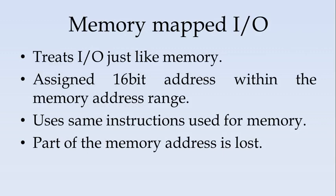Memory mapped IO, as the name suggests, the IO is mapped like a memory. The 8086 treats the IO device just like a memory. Since it is a memory, 16 bit address are assigned for this IO devices within the memory address range. Within the memory address range any of the address can be assigned for the IO device. Since it is just treated like a memory, the 8086 instructions for memory can be used for accessing the IO device. And since the IO addresses are used in the memory address space, some of the memory address is lost for IO. So that is a drawback for memory mapped IO.